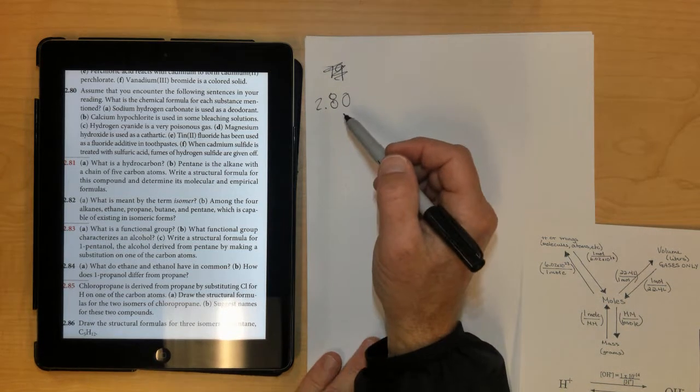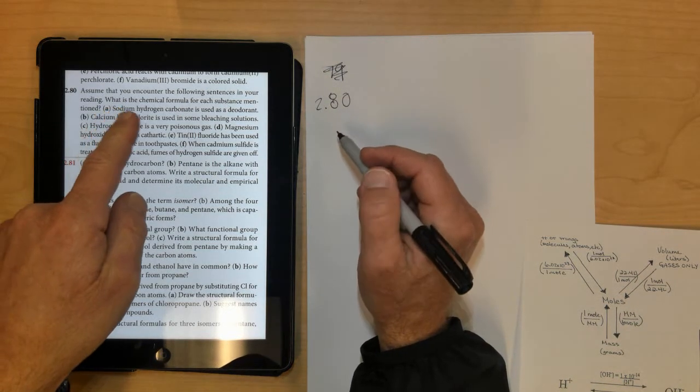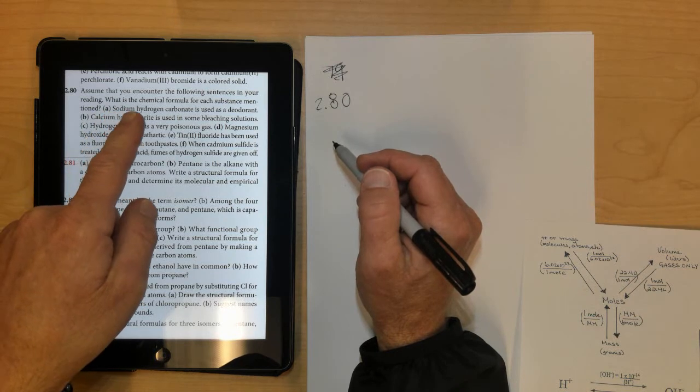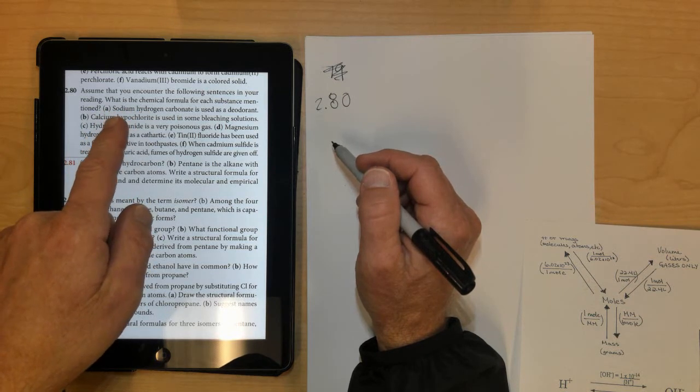All right, so this is 2.80. It says, assume that you encounter the following sentences in your reading. What is the chemical formula for each substance mentioned?